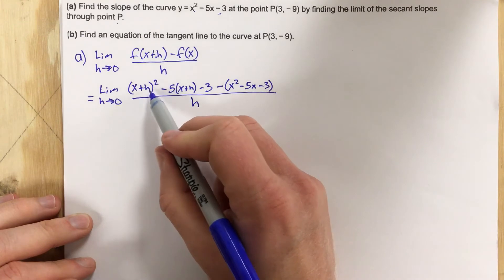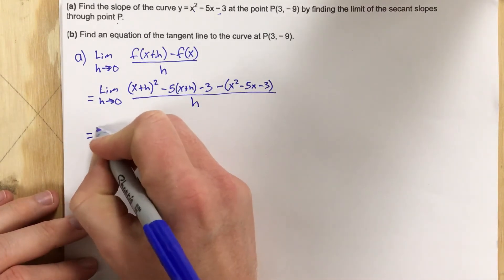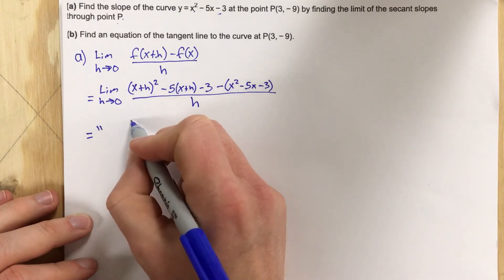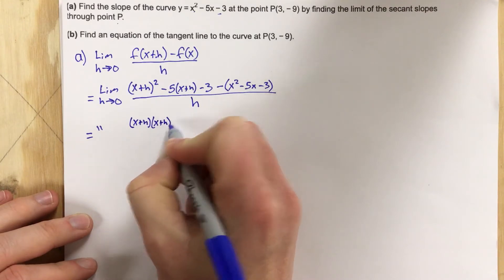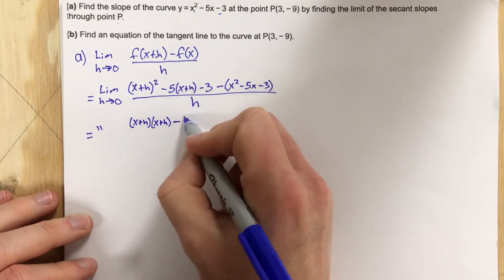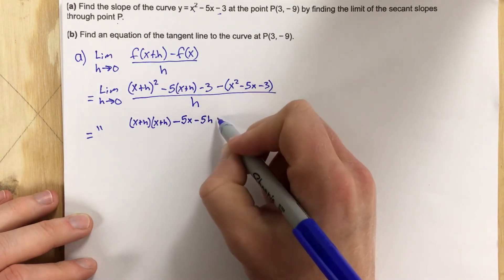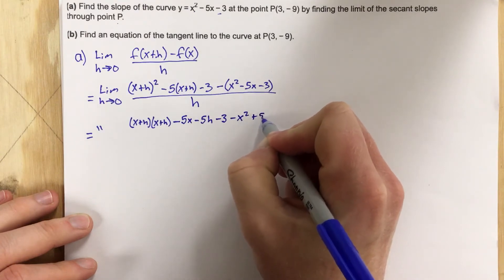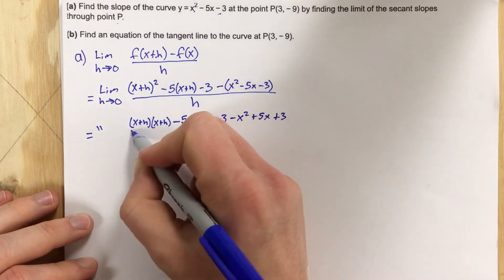Now this (x+h) squared, I'm going to write that as (x+h) times (x+h). So this is the limit of (x+h)(x+h) minus, I'm going to distribute, 5x minus 5h minus 3, minus x squared plus 5x plus 3, all over h.